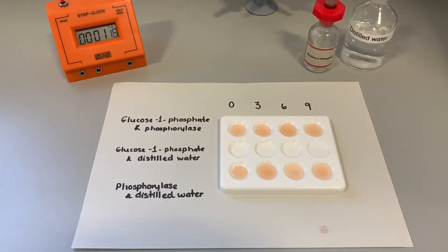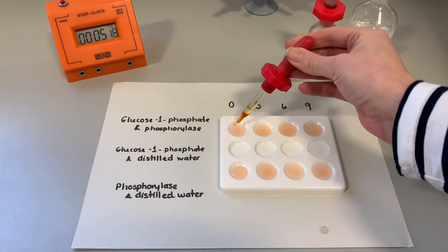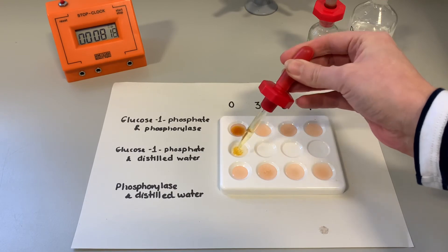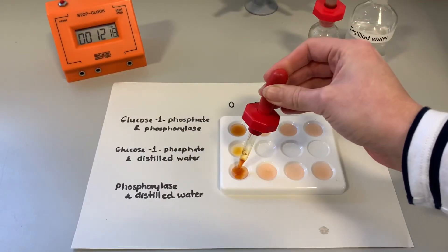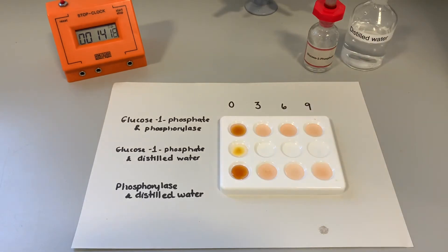So we'll start our stop clock now and what we'll do is add iodine to the first row and see if any starch is currently present. So as we can see, no color change, therefore no starch is currently present.